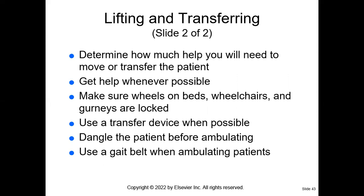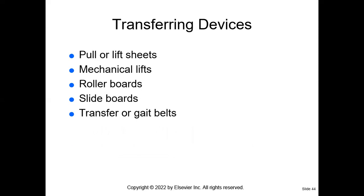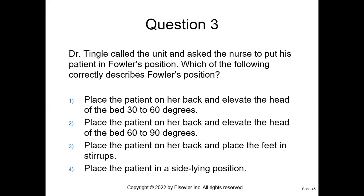Make sure the wheels are locked, use a transfer device like a draw sheet or lift sheet, and dangle the patient before ambulating. Always use a gait belt when ambulating patients — if the patient becomes unsteady or weak, you can use the gait belt to ease them down to the floor. Transferring devices include draw sheets, pull sheets, lift sheets, mechanical lifts like the Hoyer lift, roller or slide boards, and transfer and gait belts.